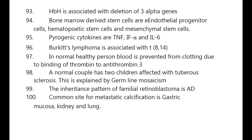HbH is associated with deletion of three alpha genes. Bone marrow-derived stem cells are endothelial progenitor cells, hematopoietic stem cells, and mesenchymal stem cells. Pyrogenic cytokines are TNF, interferon alpha, and interleukin 6. Burkitt's lymphoma is associated with t(8;14). In a normal healthy person, blood is prevented from clotting due to binding of thrombin to antithrombin 3. A normal couple with two children affected with tuberous sclerosis is explained by germline mosaicism. Inheritance pattern of familial retinoblastoma is autosomal dominant. Common sites for metastatic calcification are gastric mucosa, kidney, and lung.